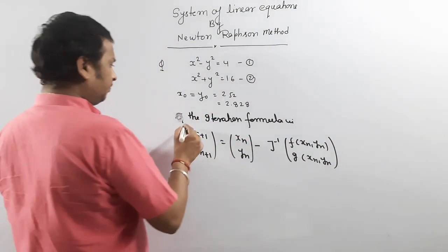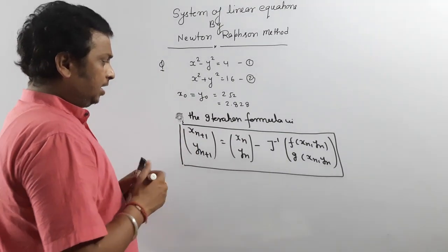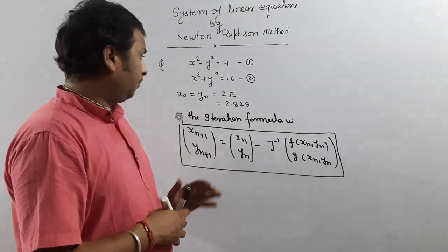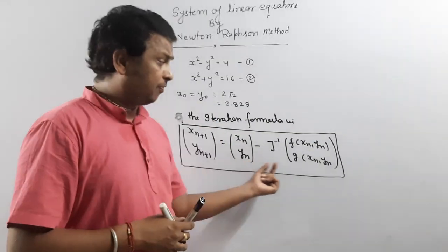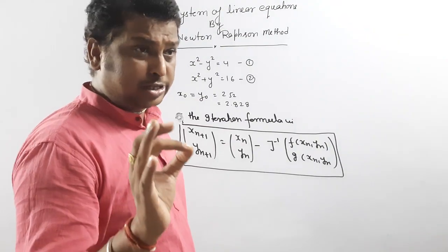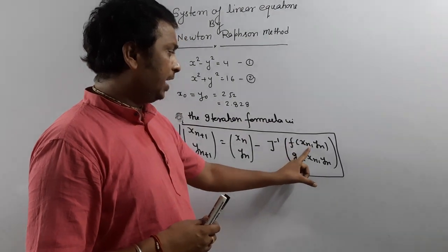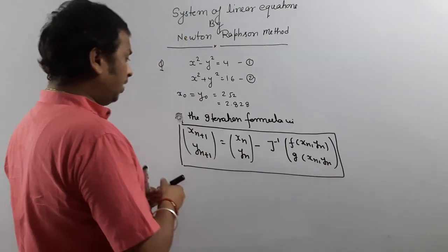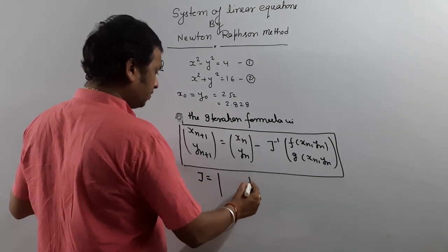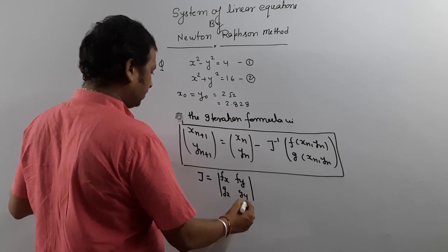I will explain what this formula means. What is J? To solve this, we want to calculate x and y values. In the iteration formula, xn is in matrix form. So x(n+1), y(n+1) equals [xn, yn] minus J inverse. J is simply the Jacobian of the two functions f and g, determined as the matrix of partial derivatives: fx, fy, gx, gy. This is the Jacobian.